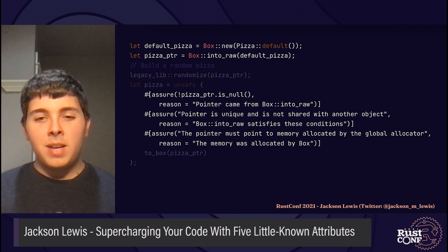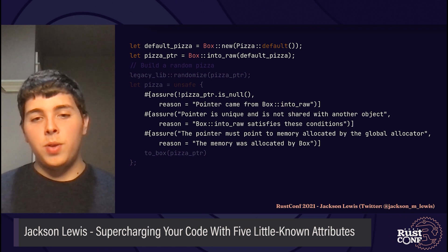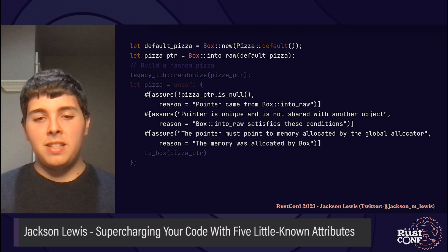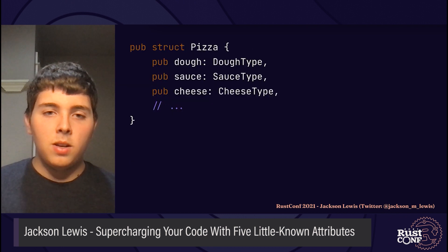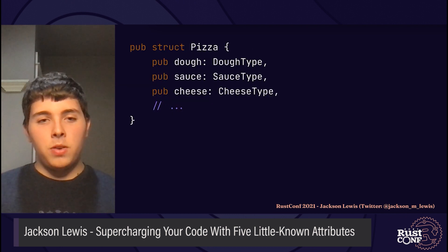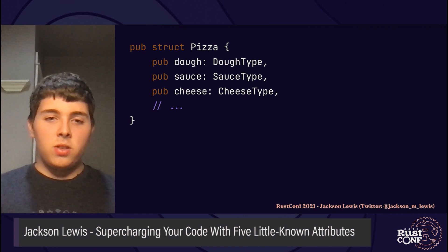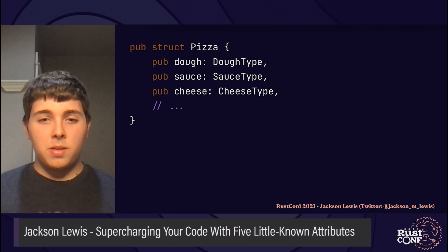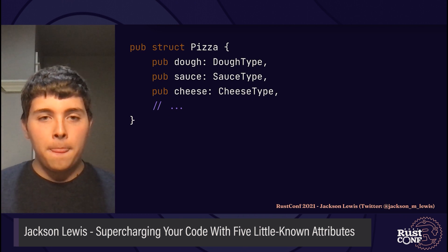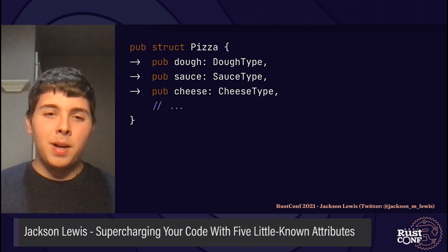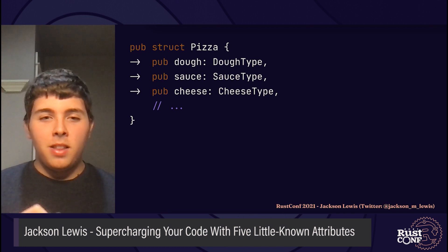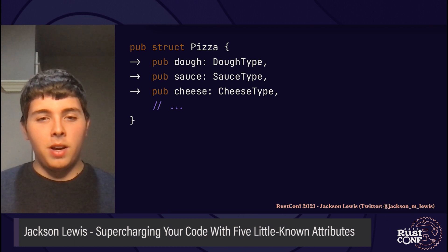That being said, I highly recommend that you limit this attribute to functions that you define internally, so downstream users don't need to add pre as a dependency to their crate just to call the function. The next week, you're asked to perform a refactor on the pizza struct. When you go to make some changes to it, the definition looks off — something about it is seriously bothering you, but you can't place your finger on it. Oh, that's right — it's these publicity modifiers right here.